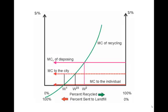And then, of course, with the externalities incorporated, the social optimum would be at W2, further to the right — an even higher level of recycling.